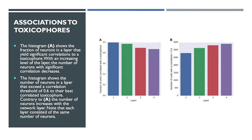Another interesting finding in the paper was the concept of toxicophores — a set of rules where if your chemical has certain structural features, it's probably toxic. They fed these as input features to the neural network. What they found was that the network was actually learning and detecting these toxicophores on its own. The percentage of neurons detecting toxicophore features went down as you went deeper in the layers, but the correlation to real toxicophores went up. Earlier layers pick up more but simpler features; deeper layers pick up fewer but more important, higher-level features.